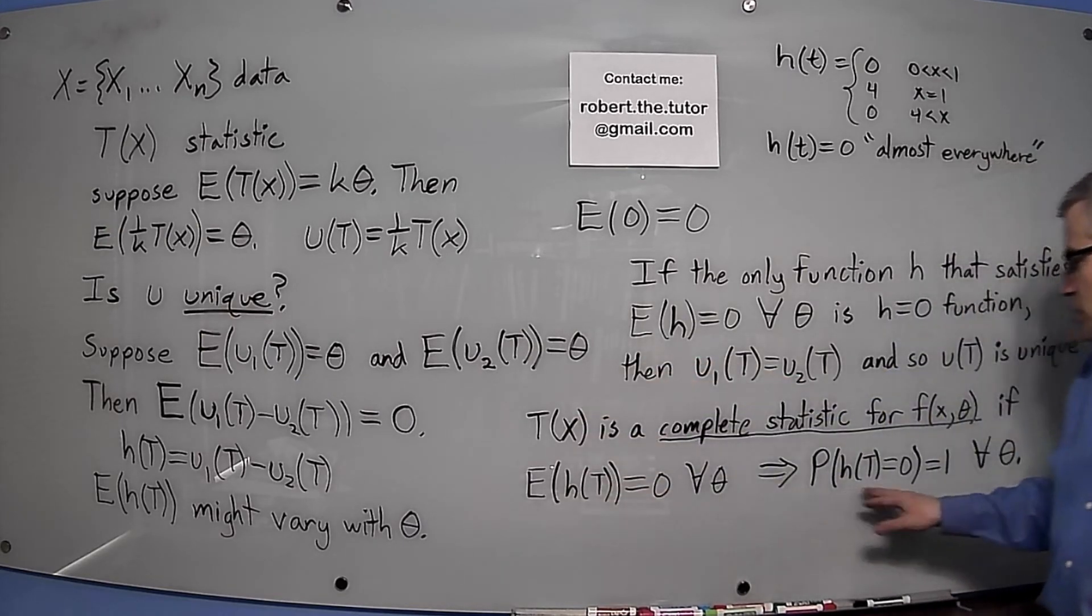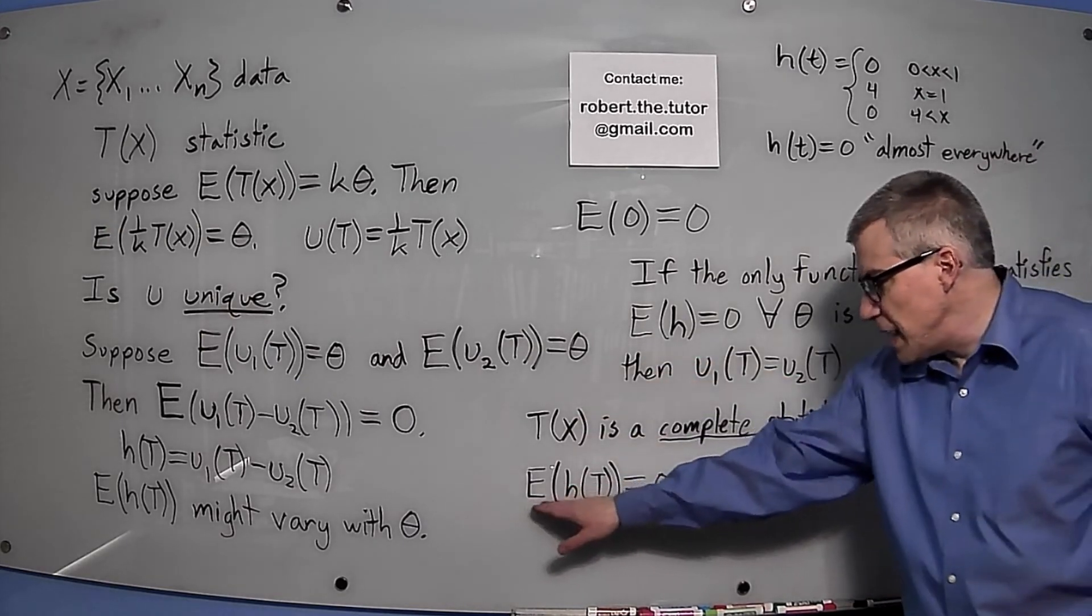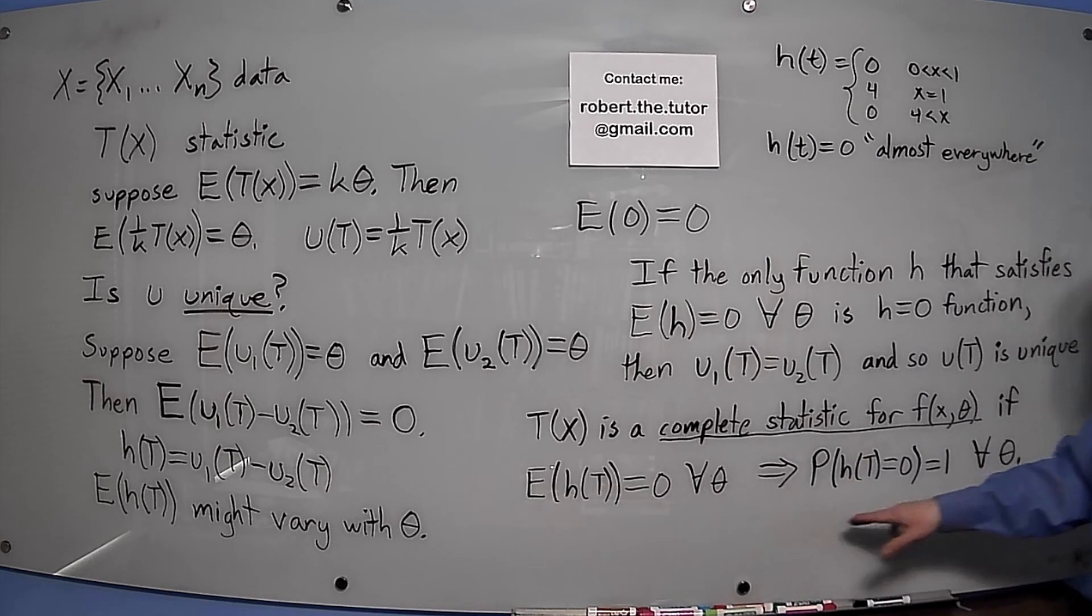So this definition says that if the average of h is 0, then h has to be 0.